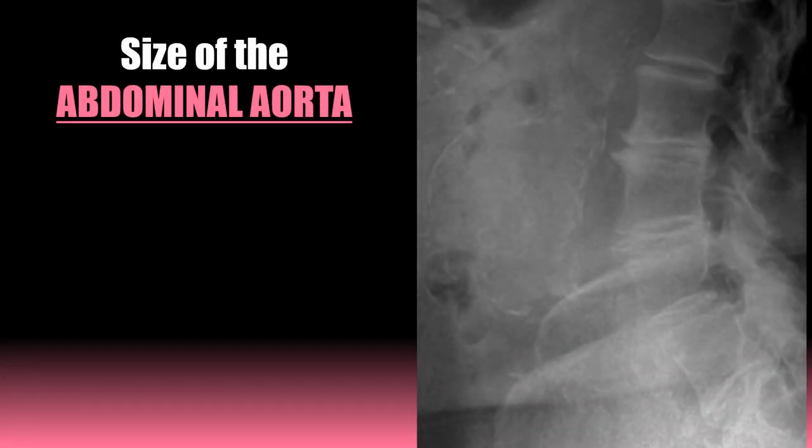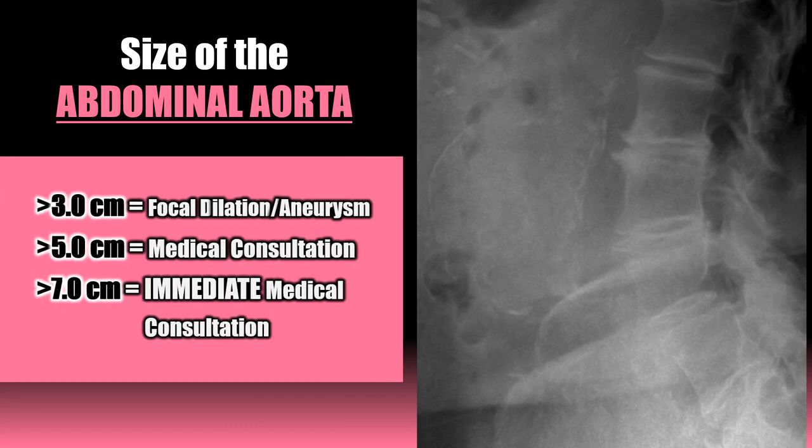What is considered too big in regards to the size of the abdominal aorta? Over three centimeters is focal dilatation or aneurysm, over five centimeters warrants a medical consultation, and over seven centimeters is an immediate medical consultation.